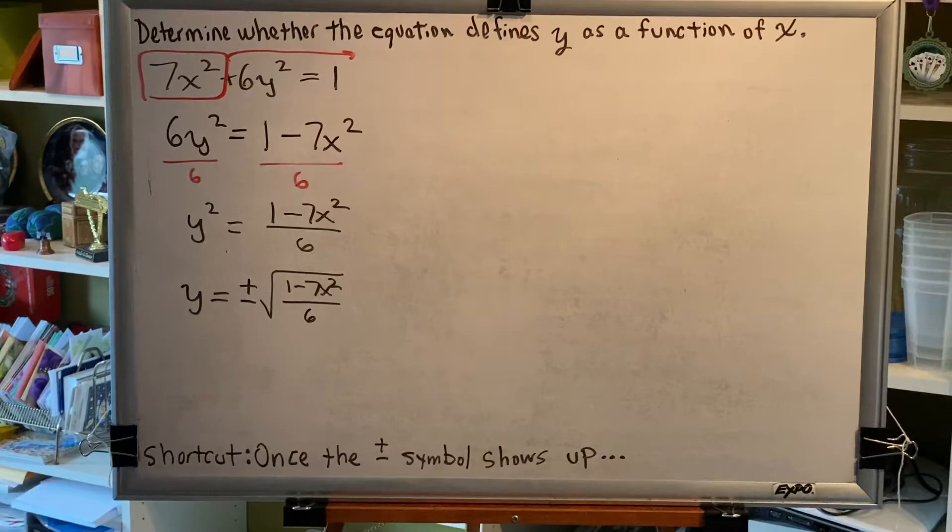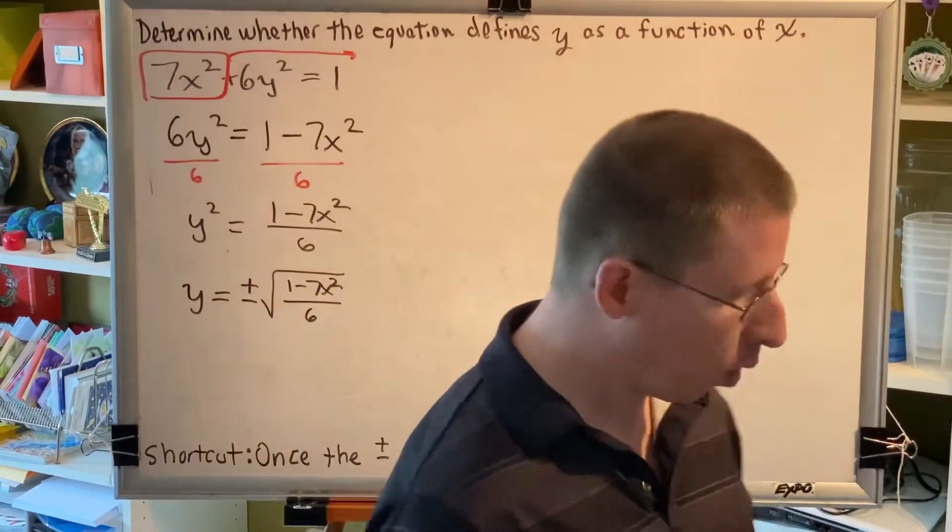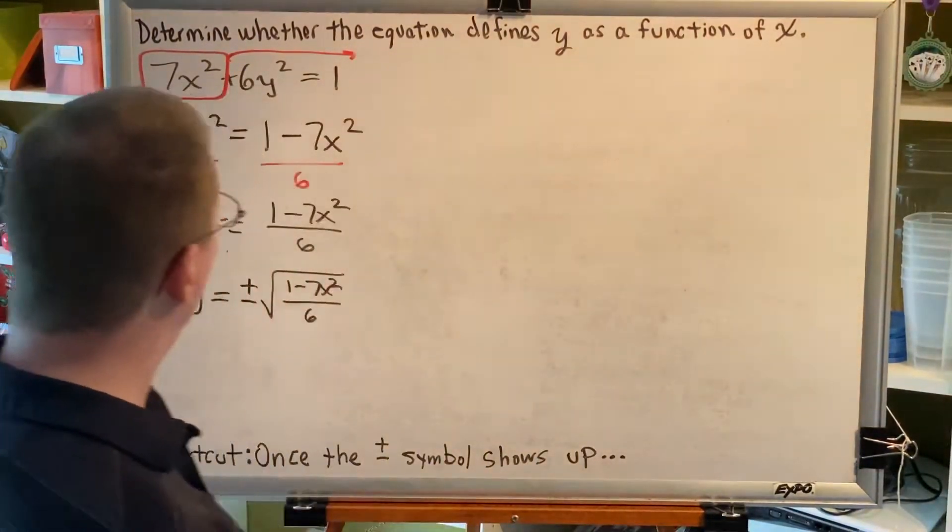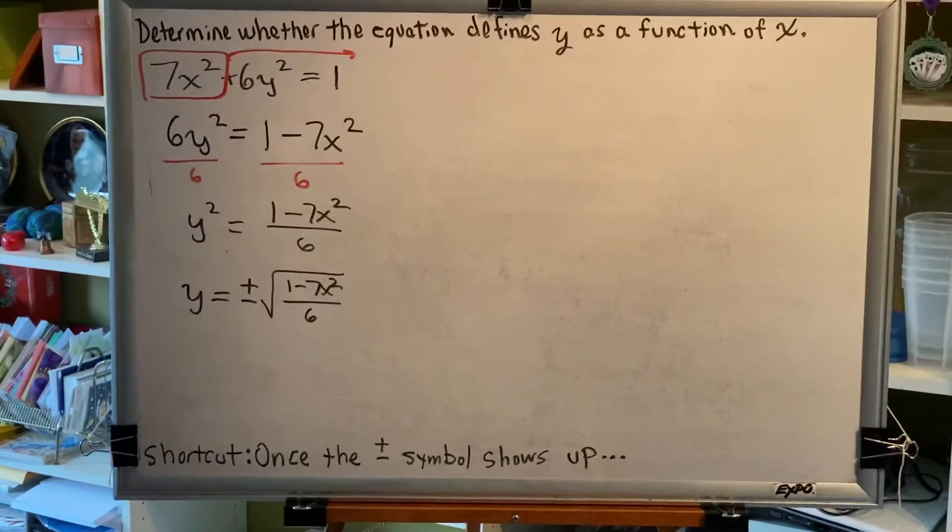Great, we've done step one, solve for y. Now we have to do step two: find a real value for x that results in two or more real values for y. This is where we need to be thoughtful. We're going to replace x with a number, and then we're going to solve for the value or values of y.